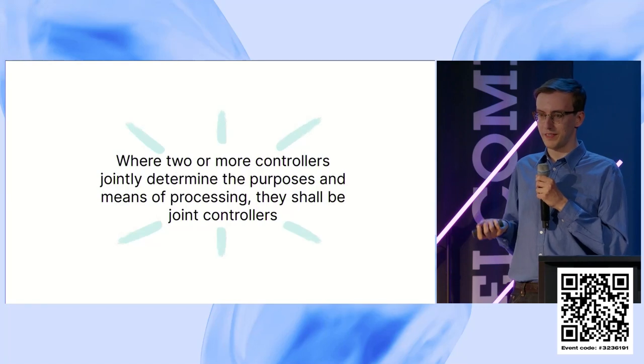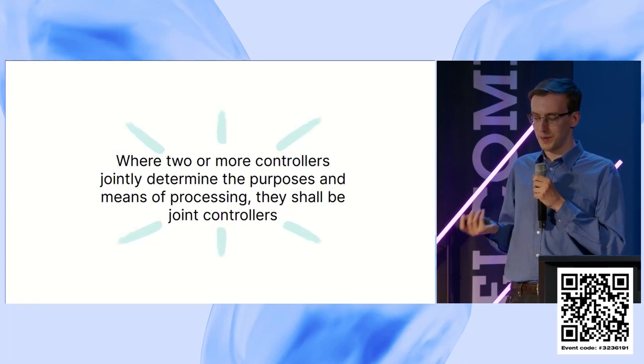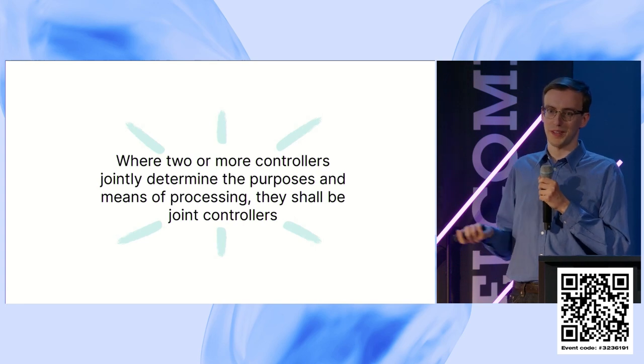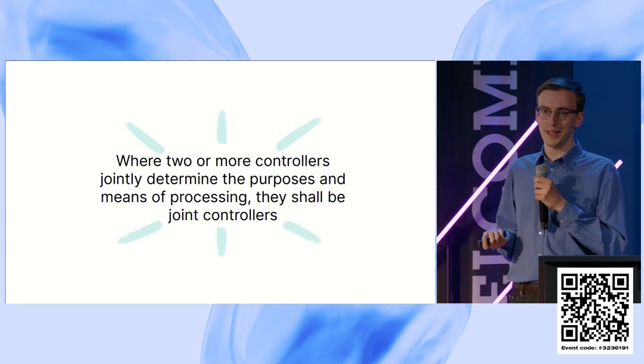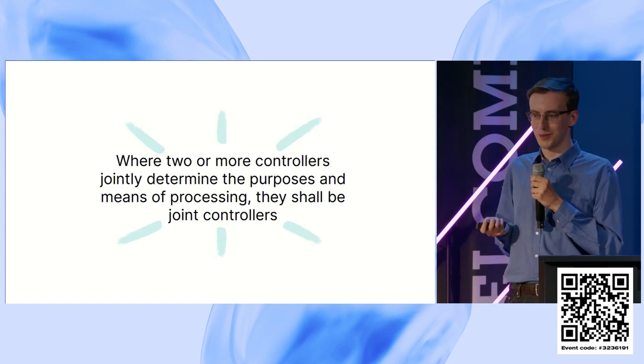Let's talk first about the basics of the concept of joint controllership, which seems very simple at first. There are two controllers or more controllers. We jointly determine the purposes and means of processing — a joint agreement, joint goal, joint purpose, joint approach.